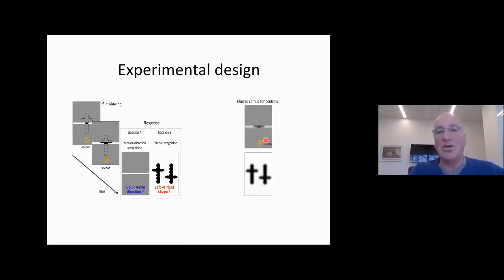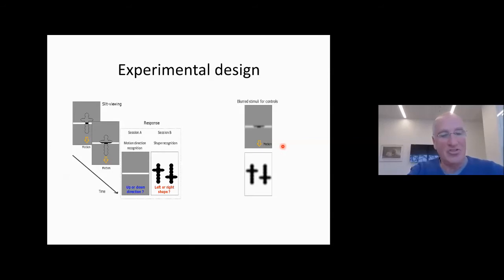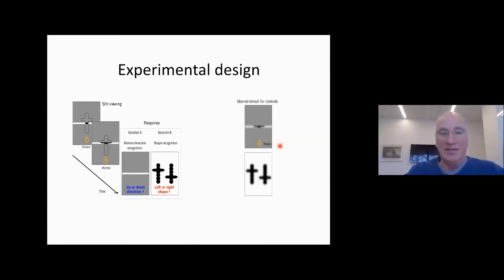For the controls, we blur the stimuli throughout all experiments — we blur to make sure that patients don't do worse than controls simply because of blurry vision, and due to amblyopia which remains even after optical correction. There are two tasks: motion direction discrimination and shape recognition, done in two different sessions within the same day.